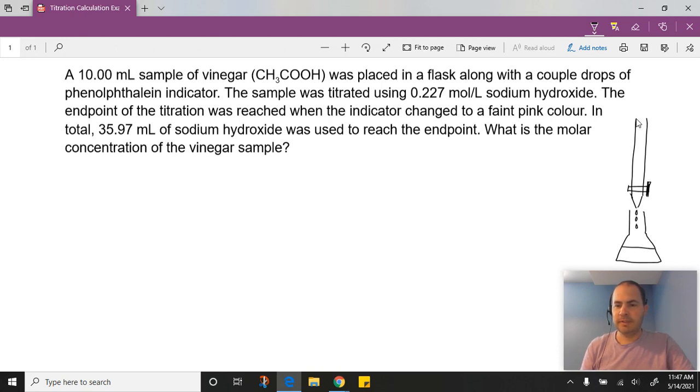In this particular example, we have a sample of vinegar. So in my flask would be my vinegar, and we use 10 mLs of it. In the burette, that's where my sodium hydroxide is, my NaOH, my base. I know its concentration is 0.227 moles per liter. So from this, if I can measure exactly what volume of sodium hydroxide gets used to react all this vinegar, I'll have enough information that I'll be able to find the concentration of the vinegar just using stoichiometry.